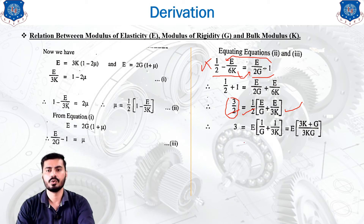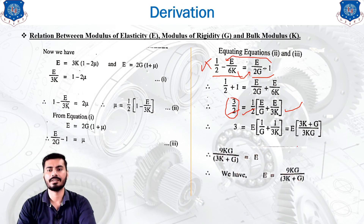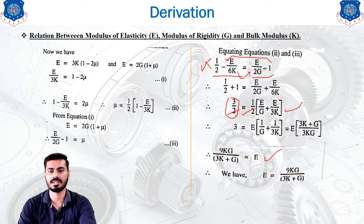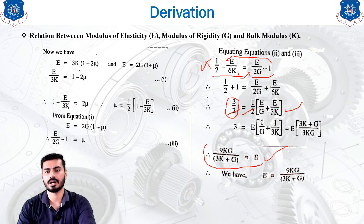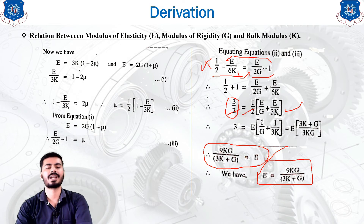Taking the LCM on the right side: 3 = E(3K + G)/(3KG). Making E the subject gives E = 9KG/(3K + G). This is our final equation — the relationship between the three elastic constants E, G, and K.